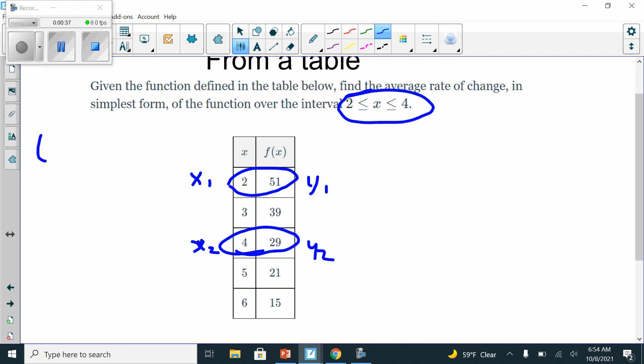If these were points, I'd have 2 comma 51. I'd have 4 comma 29. So all I'm going to do now is I'm going to take it and plug it into the formula, y2 minus y1 over x2 minus x1. So right now it's just a matter of substitution.